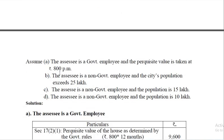There are three situations. In case A, the employee is a government employee and the perquisite value is taken as ₹800 per month. As you already learned, if the rent is decided by the government as per government rules, that should be taken. So ₹800 into 12 = ₹9,600 is the perquisite value of the accommodation.